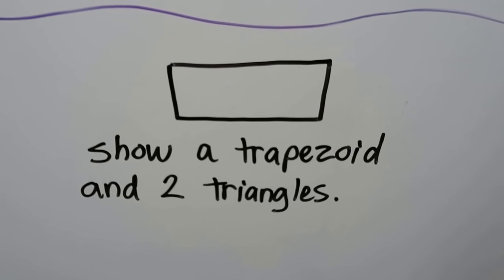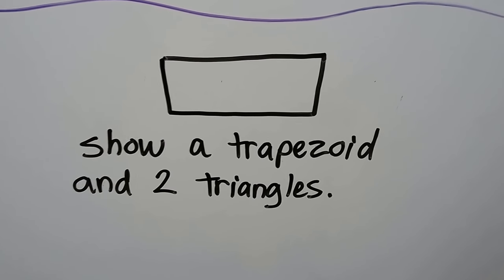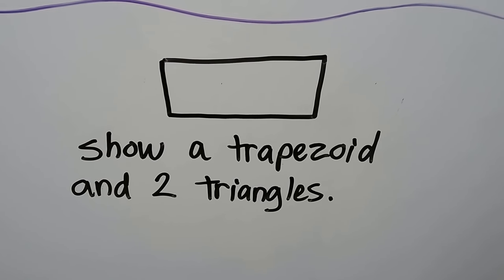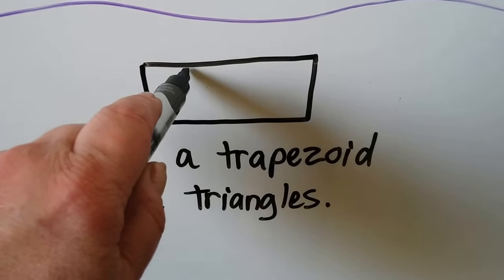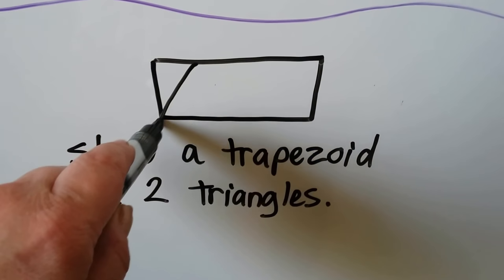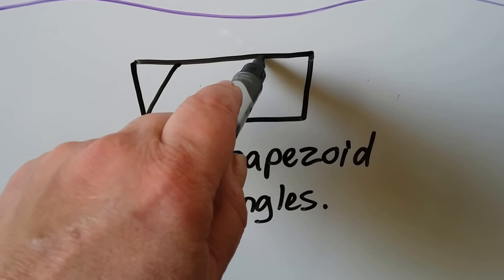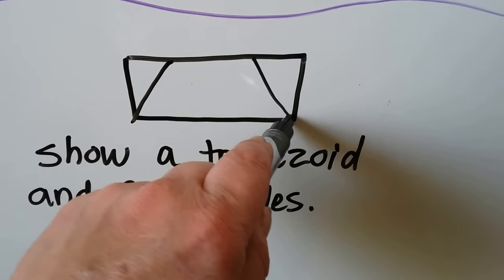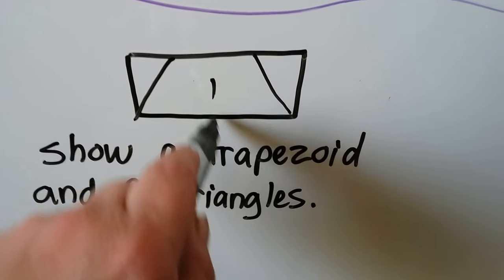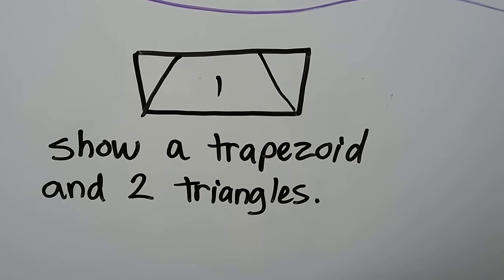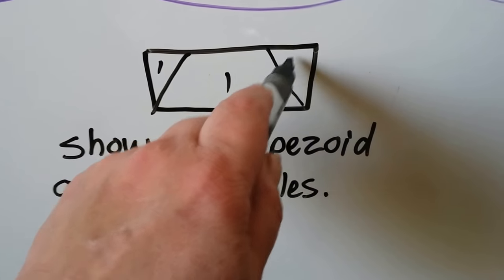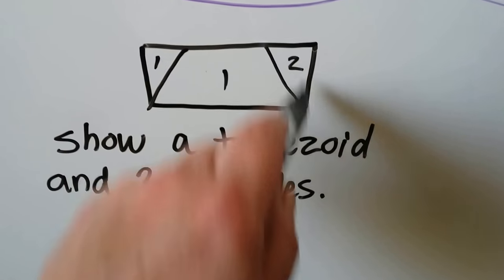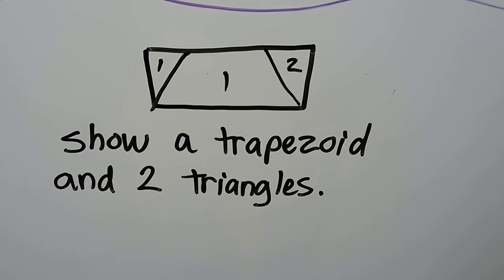Now show a trapezoid and two triangles. We could go on an angle here and on an angle here, and here's our one trapezoid, and then we have one, two triangles. See them?